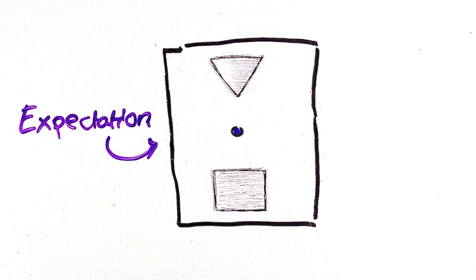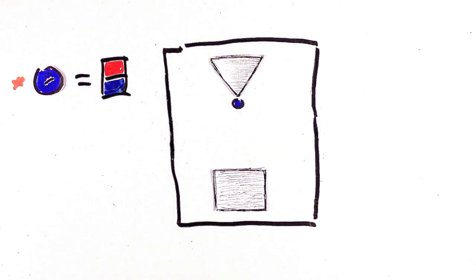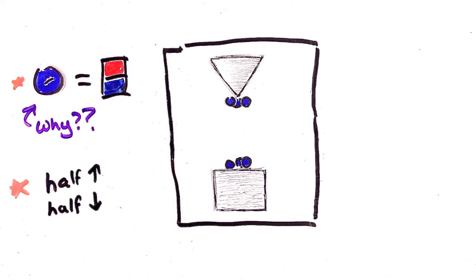But we do the experiment and find something really odd. The electrons do experience forces as if they're magnets, but they don't spread out smoothly either. Half of them go up to the same height, and the other half go down, again to the same height.